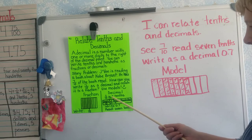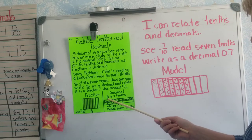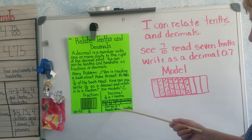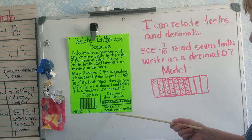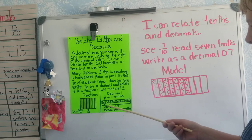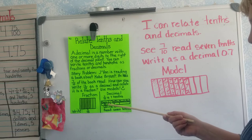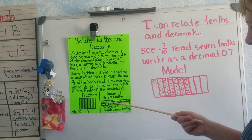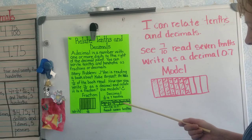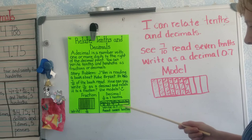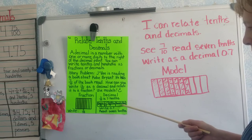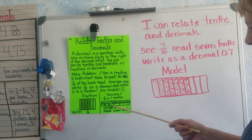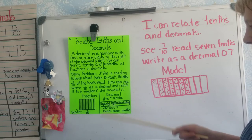To write it as a decimal, we see seven tenths, we read it as seven tenths, and then we write it as 0.7. We can also use the place value chart. We have a ones place value, we have the decimal point, then we have the tenths, and then we have the hundredths. Since we don't have any hundredths here, we put a zero in the ones, the decimal point, and then seven in the tenths.